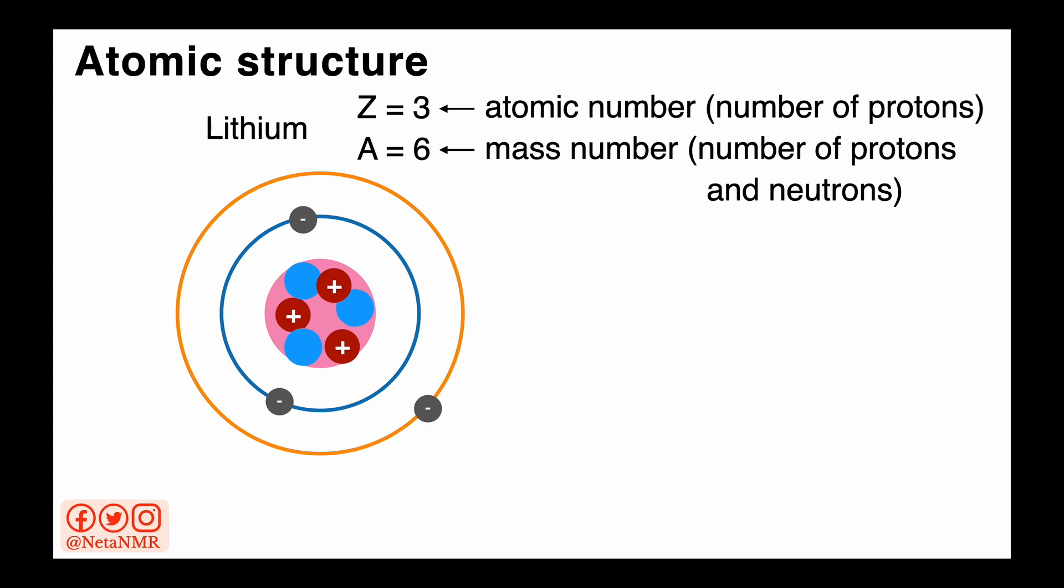To briefly recap, the atomic number Z gives us the number of protons in the nucleus. The total number of protons and neutrons in the nucleus is given by the mass number A. Here we're looking at lithium with an atomic number of 3 and a mass number of 6.